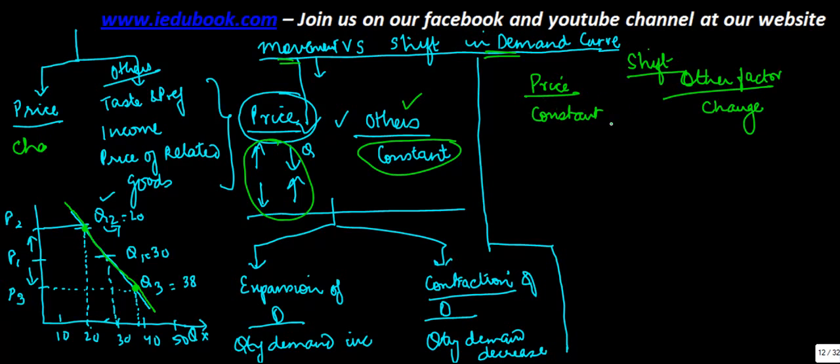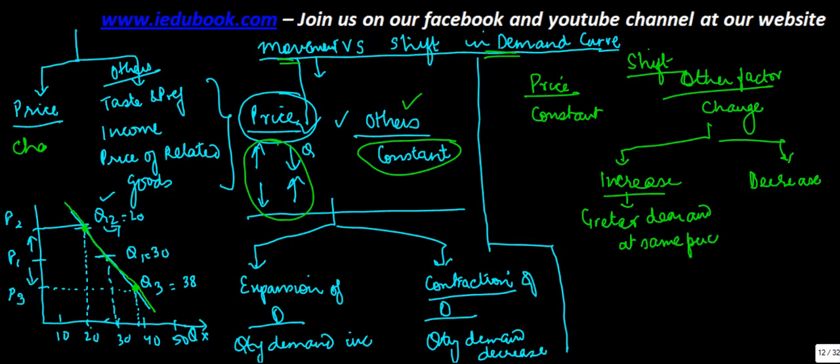In such a case, there could be either an increase or a decrease in demand. Increase would mean greater demand at same price, because we have assumed that the price is constant. Decrease means lower demand at same price.